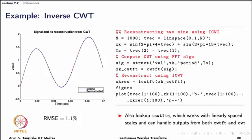The original signal is shown in blue and the reconstructed signal in red. There is some reconstruction error, quantified as root mean square error of 1.1 percent, due to the chosen grid spacing. You can explore this by changing the grid spacing in CWTFT — finer scale grids will yield lower RMSE values.